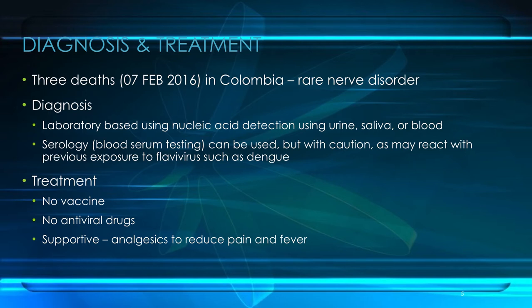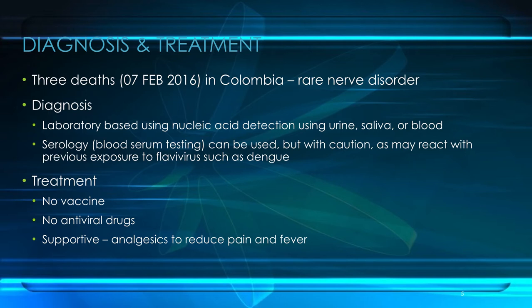Nucleic acid detection by reverse transcriptase polymerase chain reaction (RT-PCR) is going to be the primary means of diagnosis. It's important to note that most clinical laboratories probably don't have the capacity to do this, so if you suspect Zika virus, you'll probably have to send samples to laboratories on the mainland, in Australia, or to WHO-funded laboratories for a confirmation diagnosis. We can use saliva or urine samples collected during the first three to five days after onset of symptoms, or serum collected in the first one to three days — those would be suitable for detection of Zika virus.